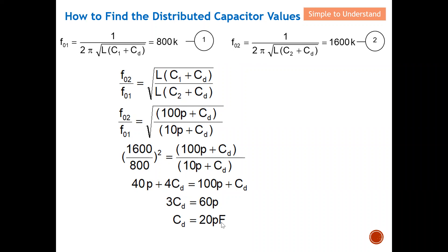So the distributed capacitor can be calculated by knowing the value of C1 and C2 when placed in parallel with the inductor. The sub-resonant frequency changes with each capacitor, giving two equations with one unknown — the distributed capacitor. With this, I'd like to end my discussion. Please do like and subscribe. Once again, sincere thanks for your support. Bye for now.